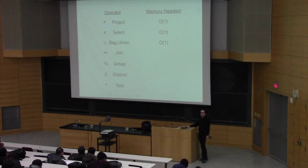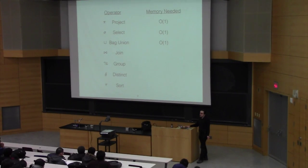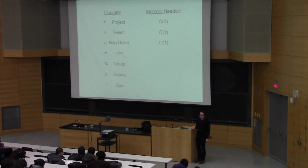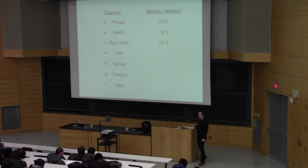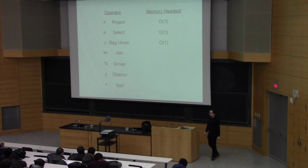Are there any join algorithms that take more than constant memory? Grace hash join is going to take up an amount of memory proportional to one of the two relations.